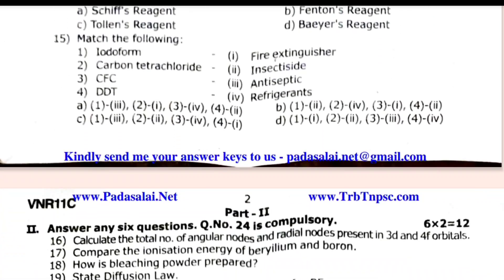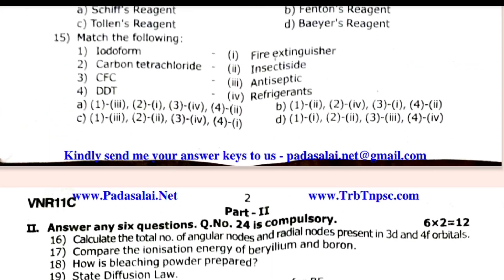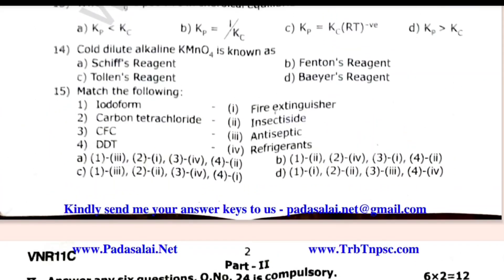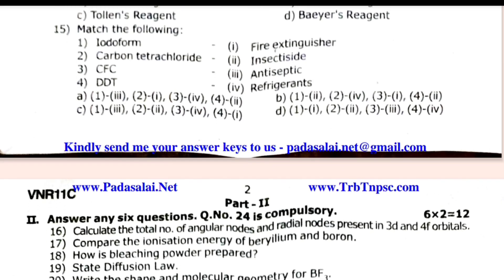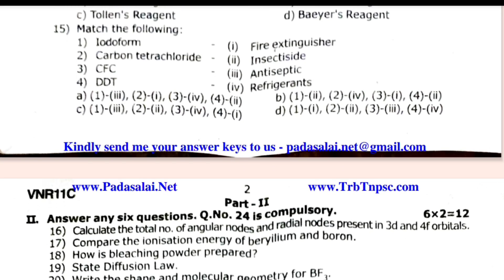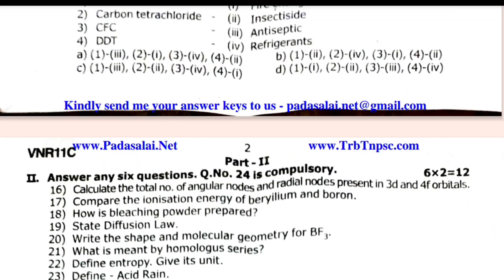Next part 2, 2 marks, 6 into 2 equals 12. Question number 24 is compulsory. Calculate the total number of angular nodes and radial nodes present in 3D and 4F orbitals. Compare the ionization energy of beryllium and boron. How is bleaching powder prepared? State diffusion law. Define acid rain. Complete the following equation.